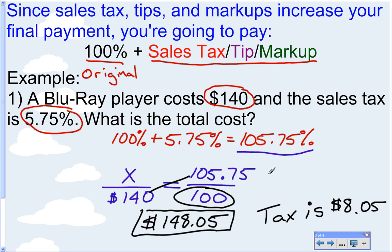All right. So, all of the problems we're going to do today are going to follow this same pattern. You're going to take either your sales tax, your tip, or your markup percent, add 100 to it. That's going to go over here on top of 100. And then, your original cost is going to go here. So, it's really very simple.